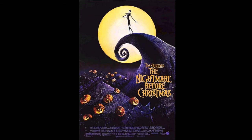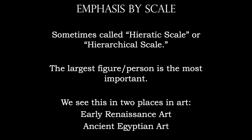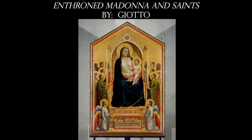With emphasis by scale, the largest figure or person is the most important. Sometimes this is referred to as hieratic scale or hierarchical scale, and there are two places in art where this is commonly seen: first, in early Renaissance art from about the 1300s, but we also see it in the art of the ancient Middle East, both in Egypt and in Mesopotamia. Here's a very common Renaissance work — the Enthroned Madonna and Saints by Giotto. We can definitely see that the Madonna at the center of the work is supersized; she's two to three times as large as any of the other figures, and she's sitting down. You can imagine how gigantic she would be if she stood up. This is hieratic scale, or emphasis by scale.